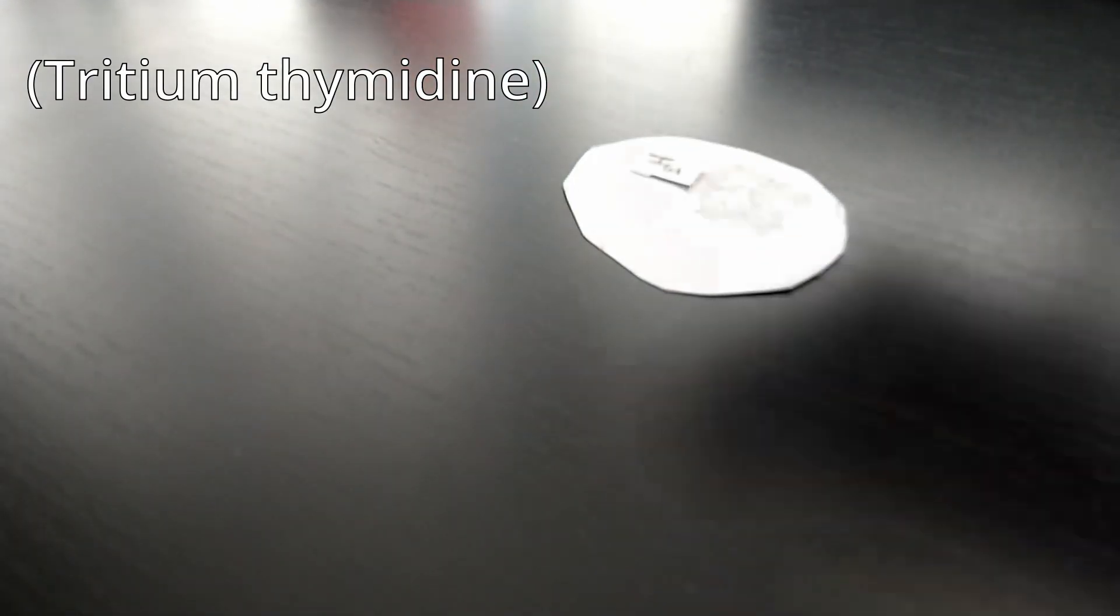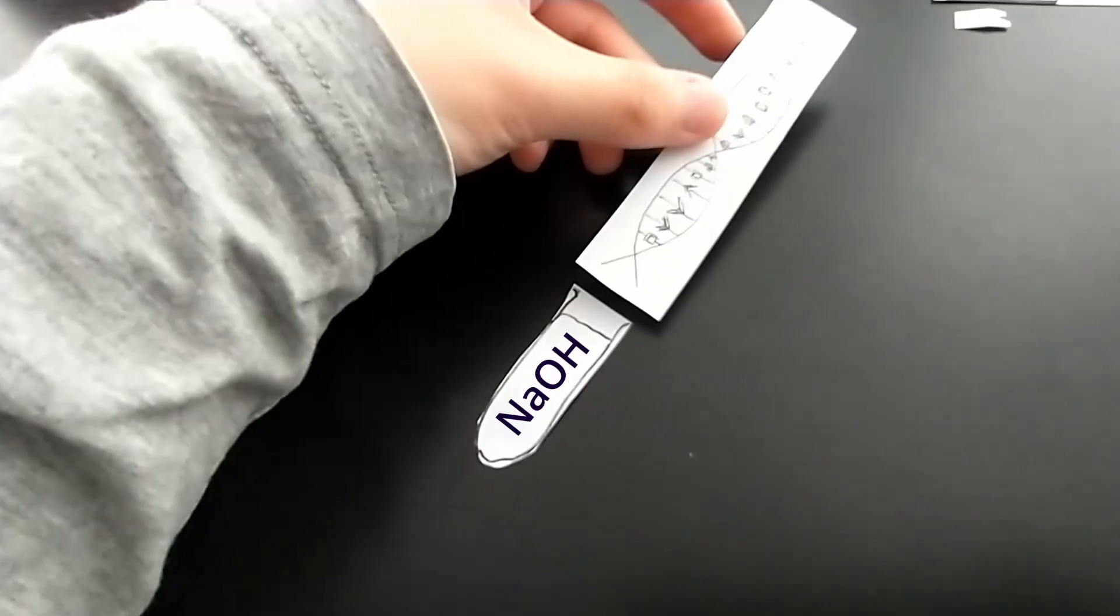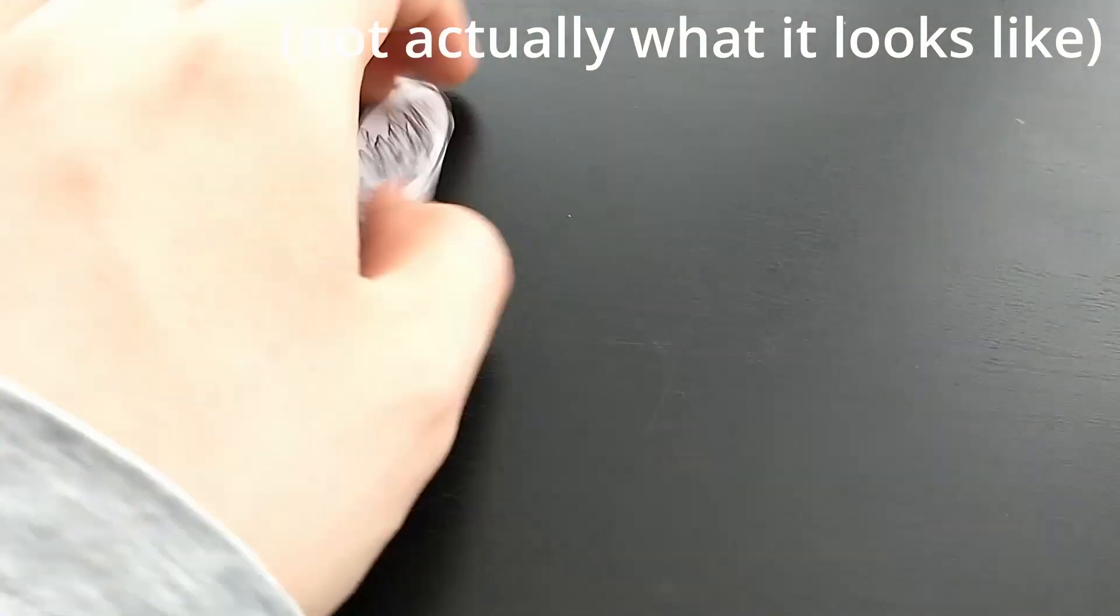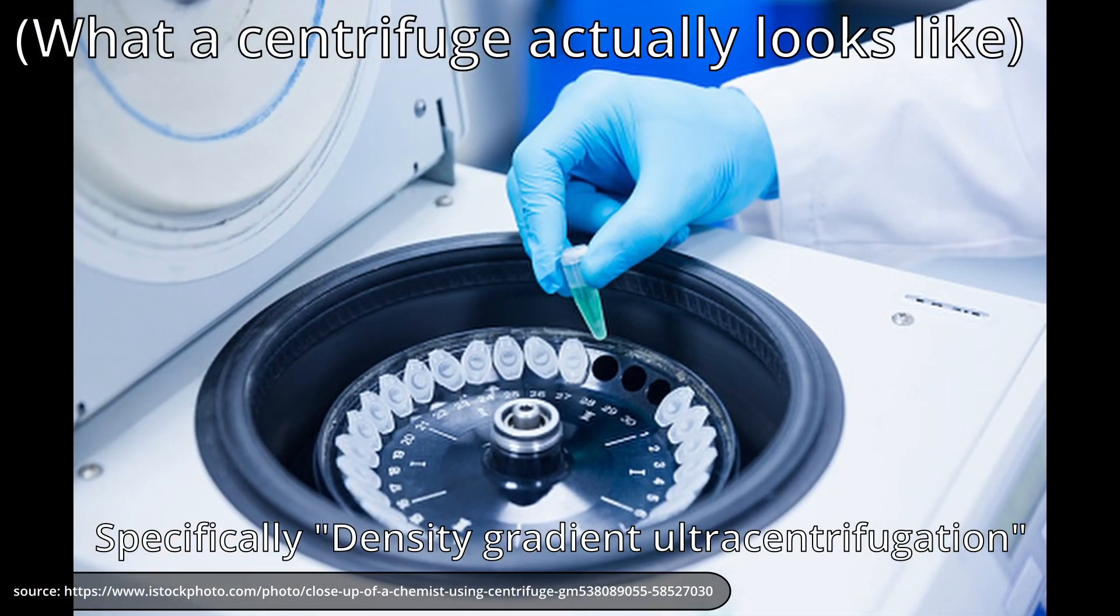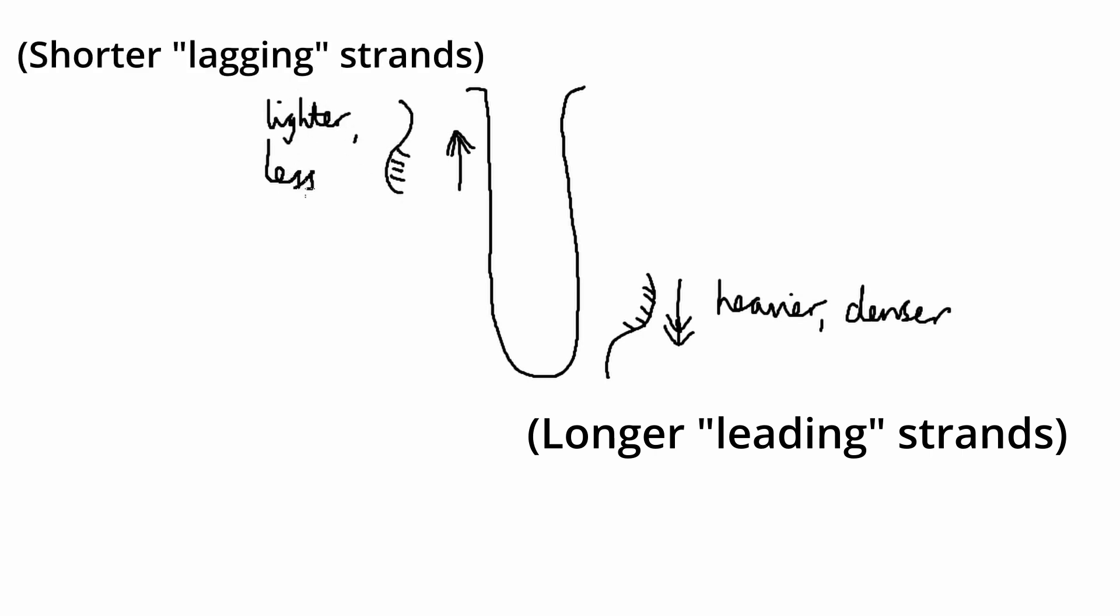To prove this, he took some radioactive hydrogen isotopes and gave it to some E. coli bacteria. After letting them replicate for a set amount of time, he extracted the DNA and spun it really fast in a centrifuge. This is ultracentrifugation and lets any heavier, denser material, like long leading DNA strands, sink to the bottom of the test tube and vice versa for lighter material, like the lagging strands.